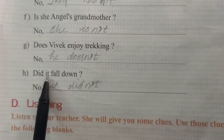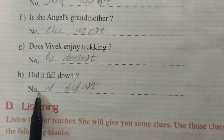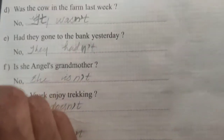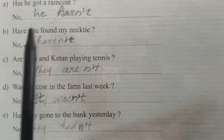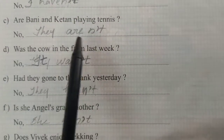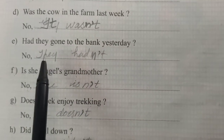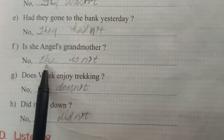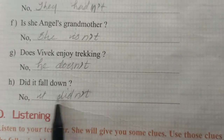Then H: did it fall down? Answer is: no, it did not. It didn't — instead of O, you should put apostrophe. I repeat — C: no, he has not. B: I have not. C: they are not. D: it was not. E: they had not. F: she is not. G: he does not. H: it did not.